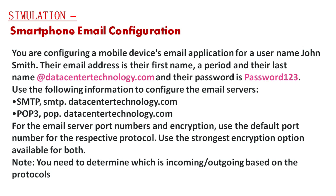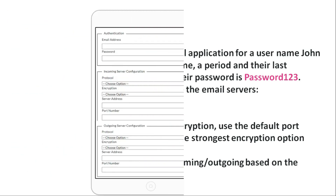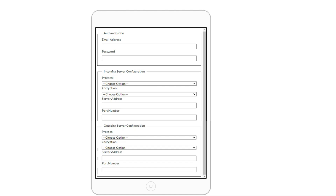For simulations, we need to determine which server is incoming or outgoing based on the protocols. In the authentication section, you have to fill in the email address and password. For incoming server configuration details, you must fill in the protocol, encryption, server address, and port number.